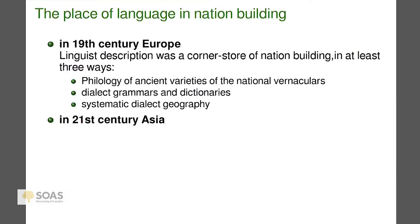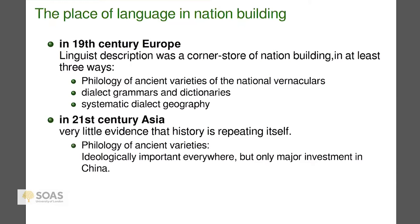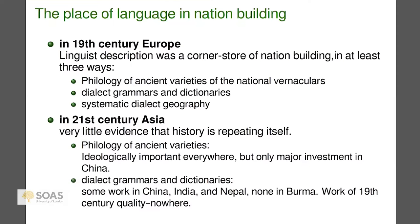For whatever reason, these elements of nationalism do not seem to be repeating themselves in Asia — that's my observation. Philology of ancient varieties: everyone pays lip service to it, but only in China do you see major investment in it. In India, as much as the BJP loves Sanskrit, you don't see people pouring over Sanskrit texts and doing editions as a manifestation of Hindu nationalism. As for dialect grammars and dictionaries, there's a little work here and there, but modern Asian states don't seem to feel the need to express national identity through linguistic fieldwork.